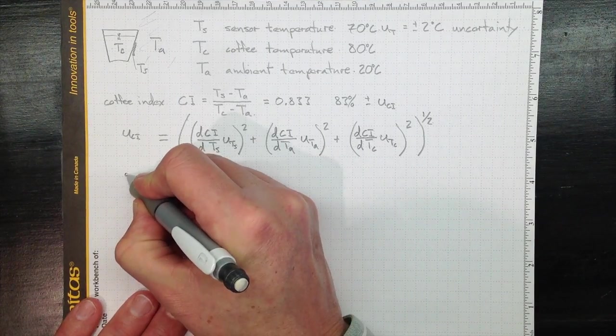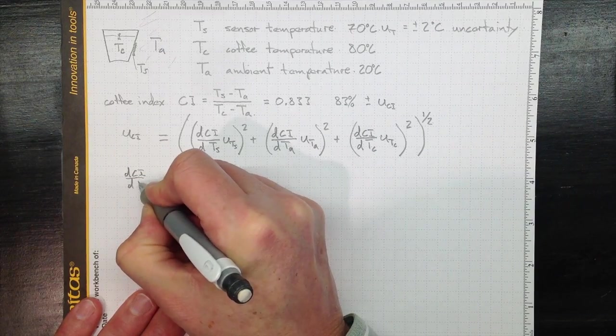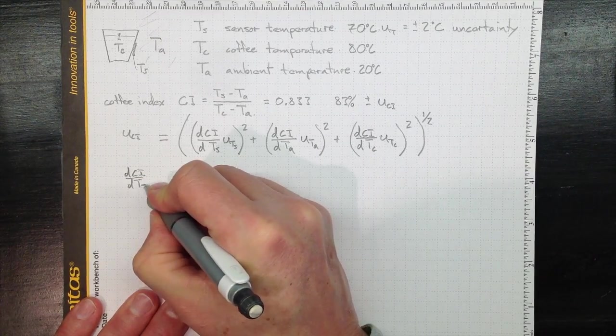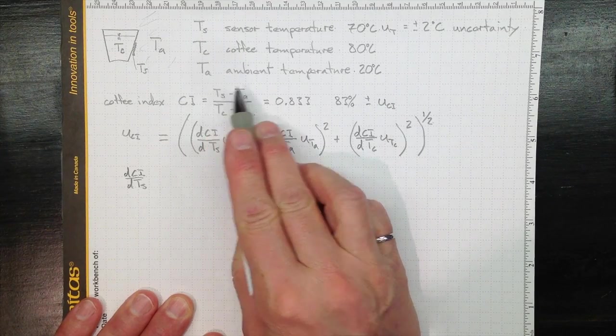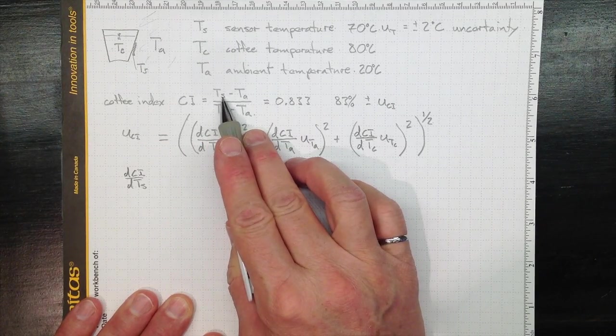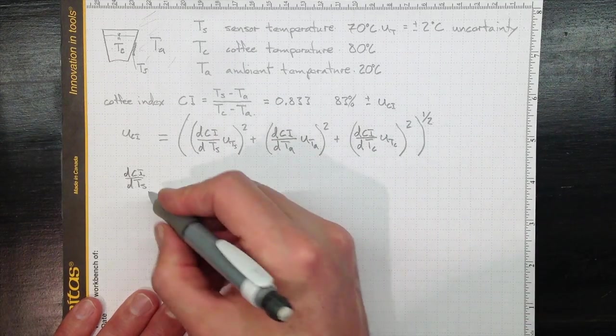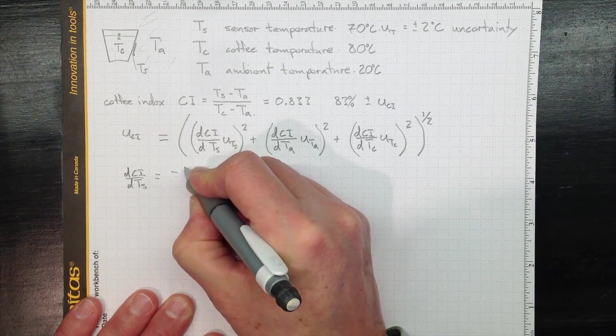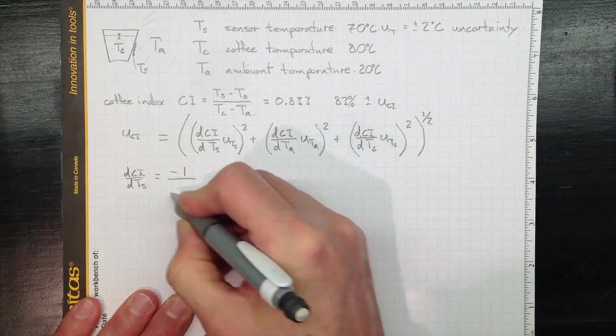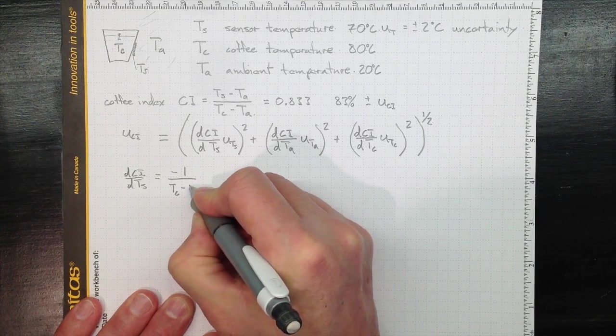So, DCI, T sub S. Well, T sub S appears only once. It's positive. Everything else, if we just take the derivative, derivative of TS with respect to TS is one. And we wind up with that equal to negative one over TC minus TA. That's a fairly simple derivative to take.